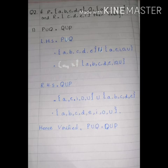Now we will solve the right-hand side: Q union P. Q set is A, E, I, O, U and P set is A, B, C, D. We unite both sets and write the result in ascending order. Our answer is A, B, C, D, E, I, O, U. This is our right-hand side.